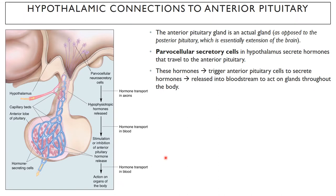The anterior pituitary is actually a gland — that's why it's also known as the adenohypophysis, 'adeno' meaning a hormone-secreting gland. This is different from the posterior pituitary, or neurohypophysis, which is essentially just an extension of the brain. When the brain is developing, the adenohypophysis doesn't arise from the neural portions of the embryo the way the neurohypophysis does — it comes from a different part and then attaches itself to the brain. So it is an adrenal-like structure.